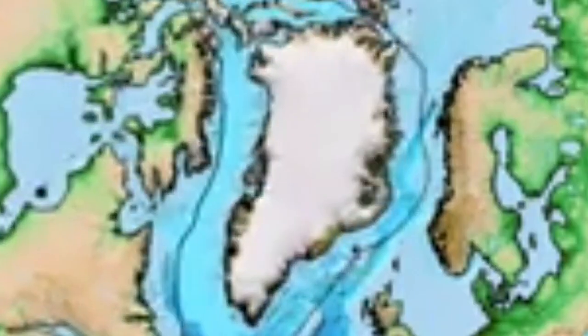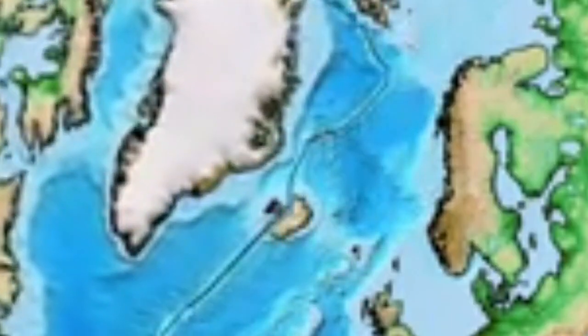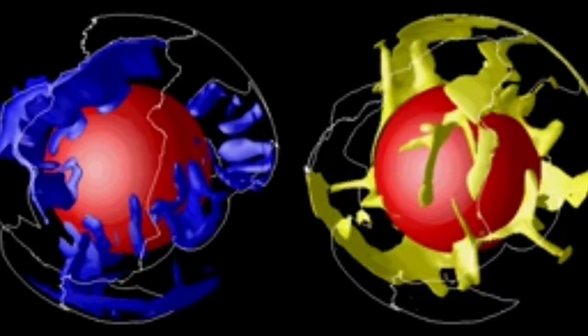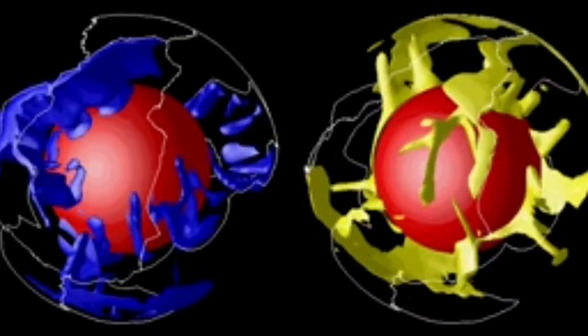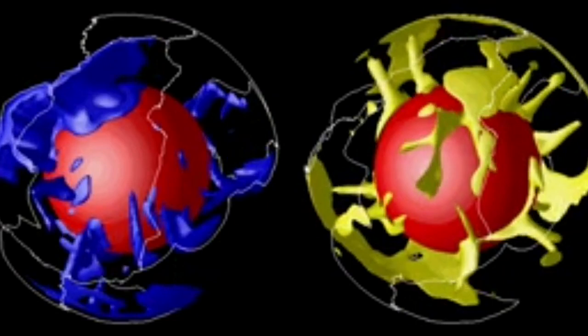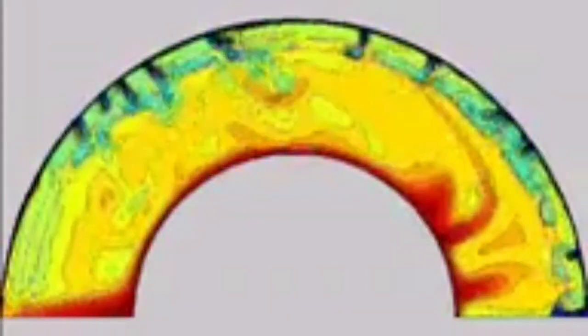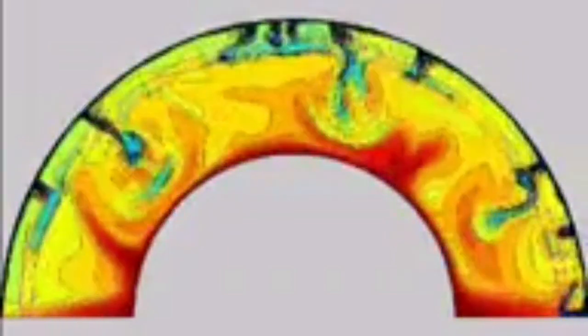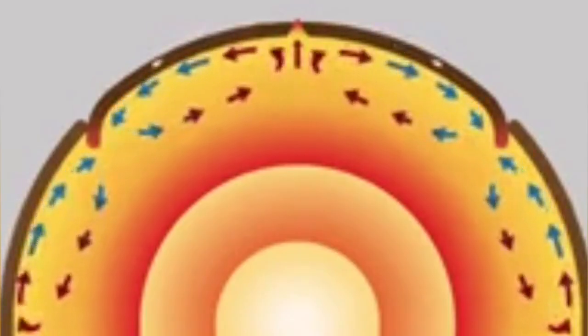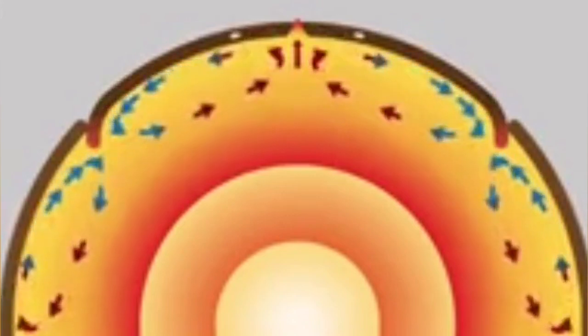This process is continuing, and where we can see it in real time is in Iceland, where the creation of the Atlantic Ocean led to the formation of this island. Inside the earth is hot, practically due to the impact heat introduced during the planet's formation. This heat creates convection, and when convection reaches the surface it creates cracks in the solidified crust at the top of the mantle, as you can see here.